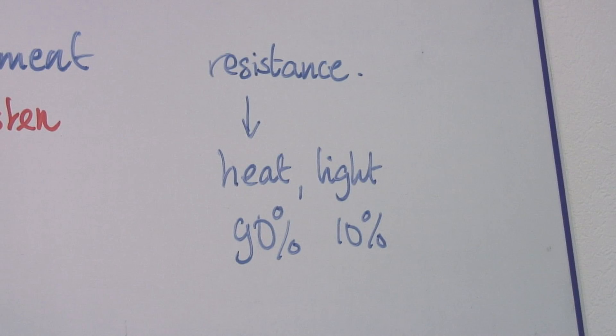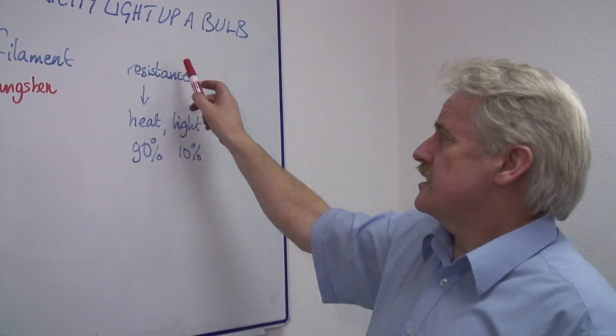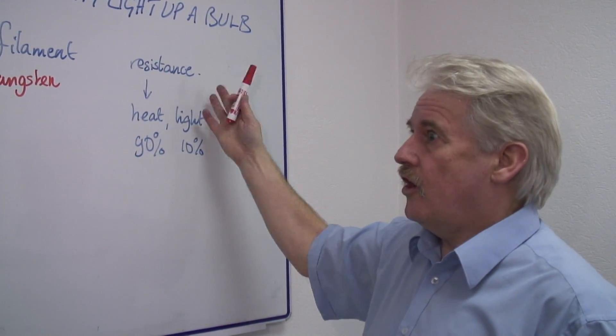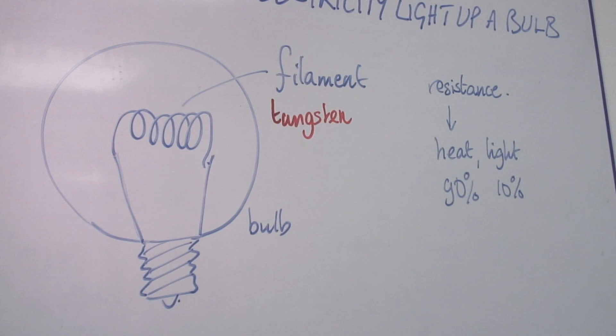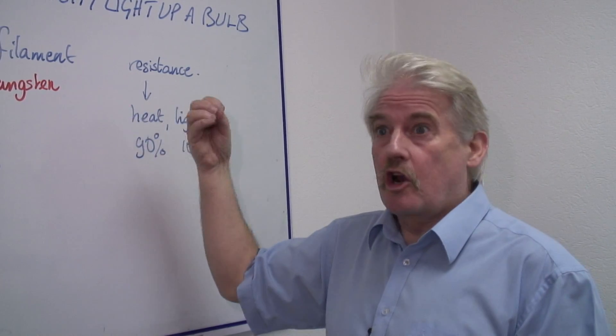So the tungsten has resistance. It gets very hot. But getting hot is no good. We don't want it hot. We want it so hot it starts to glow.